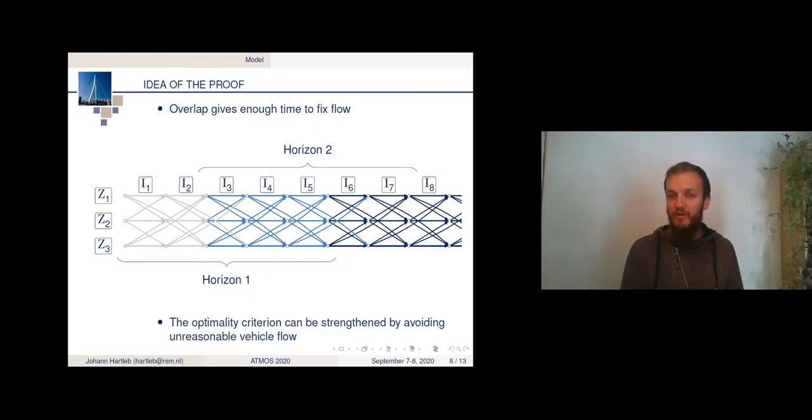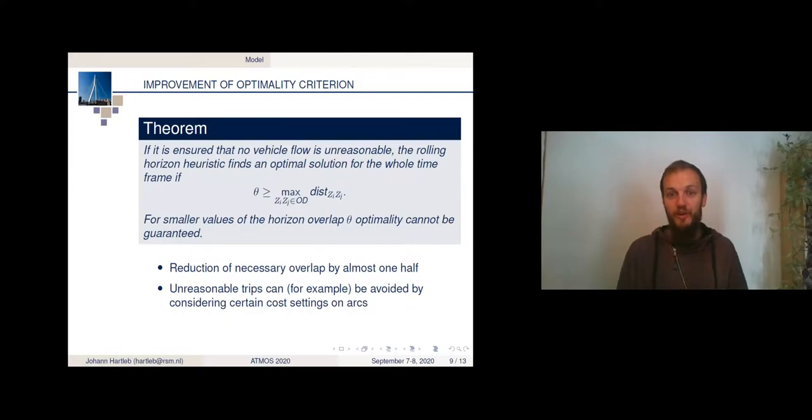And if we forbid those unreasonable vehicle flows, we can actually improve the optimality criteria. And we need to actively do this because we just minimize the number of vehicles. So any kind of vehicle flow is feasible as long as we have a minimum number of vehicles. So let's have a look at the theorem first. It is written there. If we ensure that there is no unreasonable vehicle flow, the rolling horizon heuristic will find an optimal solution if the overlap is at least the maximum distance between two zones. It used to be two times the maximum distance minus one. Now we could improve it to maximum distance. So the reduction of the necessary overlap is almost one half. This significantly decreases the computational effort we have to put into solve instances to optimality.